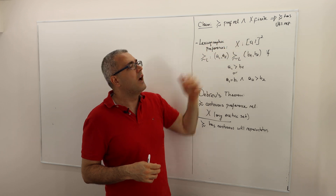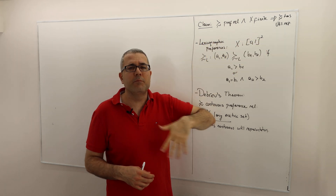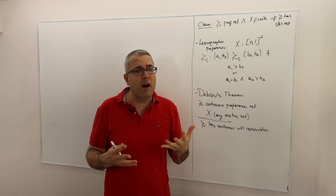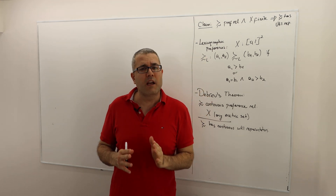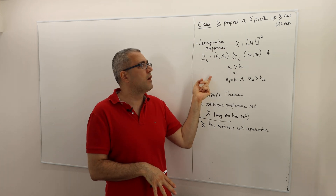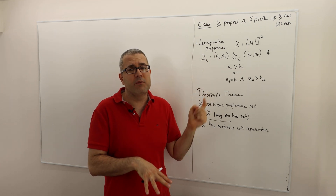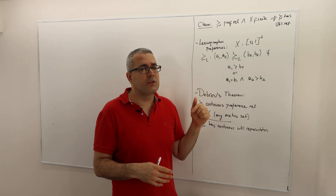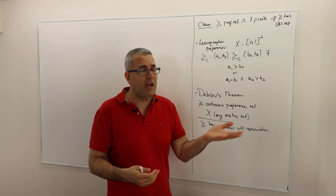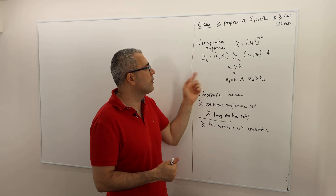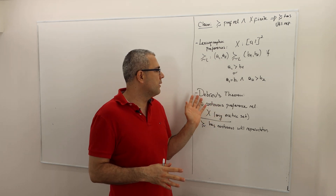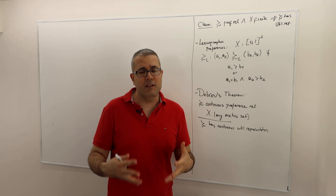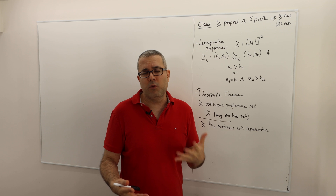However, this conclusion — that every preference relation can be represented by a utility function — is not always true if the domain of preferences is not finite. Lexicographic preferences is one nice example of this. I'm not going to prove, at least in this episode, that lexicographic preferences cannot be represented by a utility function, but the proof is not too complicated and is available in Ariel Rubinstein's lecture notes. Finally, I'm not going to define the continuity of preferences because it's highly technical for this course, but we'll talk about it.